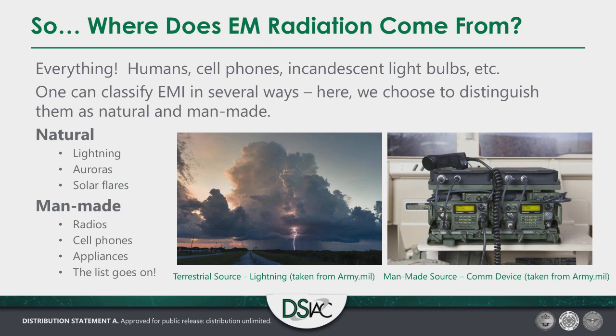We can distinguish between natural and man-made sources. Natural EMI and EM sources on Earth include lightning and auroras. Moving outside the Earth — relevant to NASA, Space Force, and the Air Force — solar flares come into play. Man-made sources include radios, cell phones, appliances, noise from computer chips, the Internet of Things — any number of things that can sit and cause problems that we have to be able to provide solutions for.